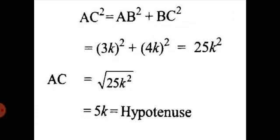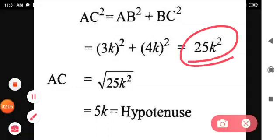Then we have to substitute those values: 3K square plus 4K square. Then we get 25K square.